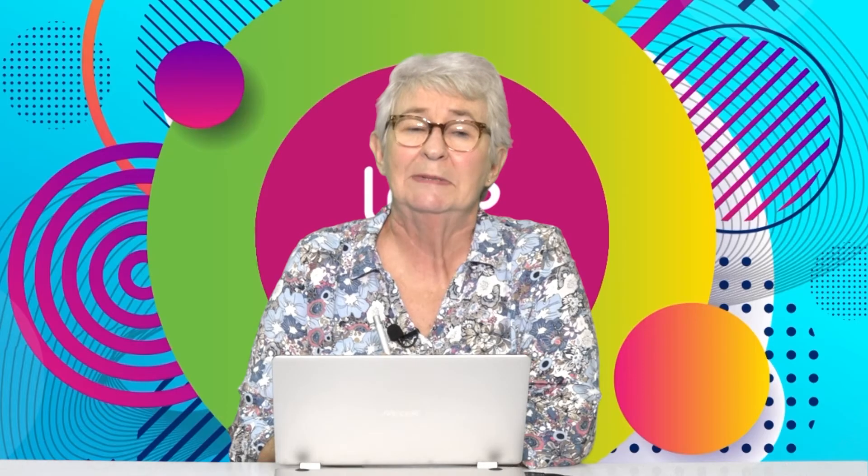Mechanical digestion starts in your mouth, and chemical digestion also starts in your mouth because saliva contains an enzyme. Once you have chewed your food, you have to swallow — that's another important process during digestion, because if you don't swallow correctly, you can actually die.